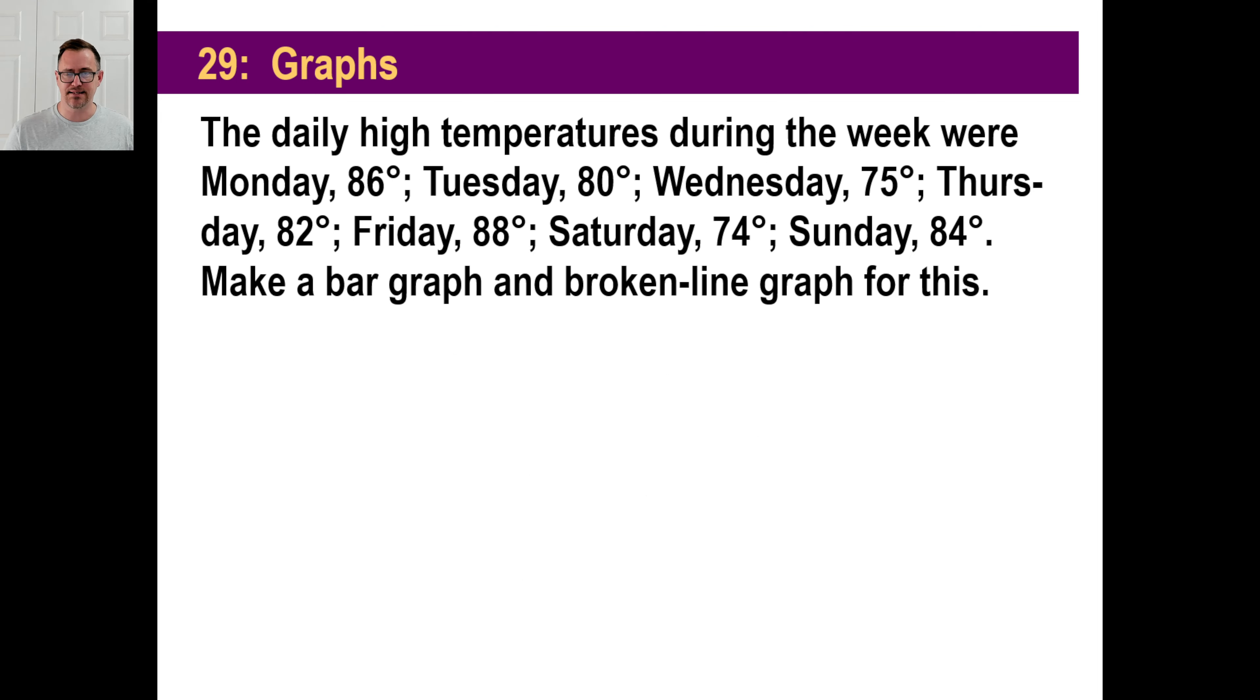Now let's go to another graph. The daily high temperatures during the week were Monday 86, Tuesday 80, Wednesday 75, 82, 88, 74, Sunday, and so on. Make a bar graph and a broken line graph for this. So here's what you would do. Mine's going to be tremendously ugly. So I'd put temperatures, and then I'd go Monday, Tuesday, Wednesday, Thursday, Friday, Saturday, and then Sunday.